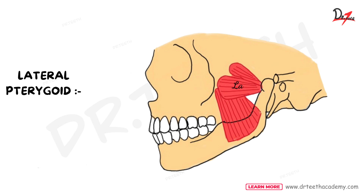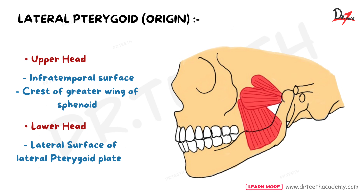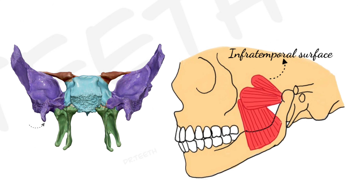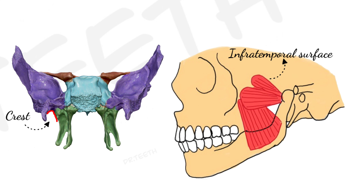The next muscle is the lateral pterygoid muscle, which has two heads: the upper head and the lower head. The upper head originates from the infratemporal surface and the crest of the greater wing of sphenoid. The lower head originates from the lateral surface of the lateral pterygoid plate.